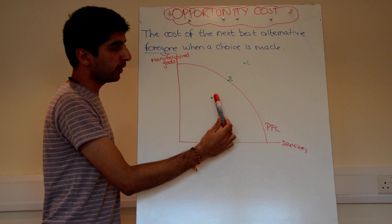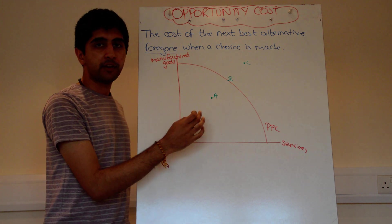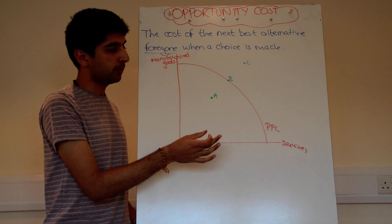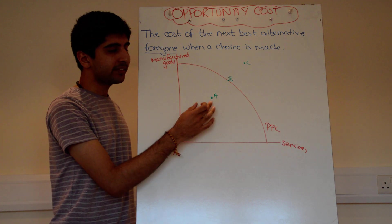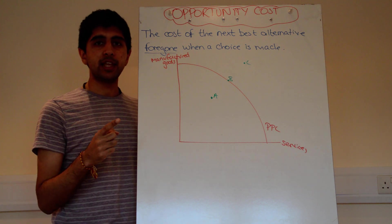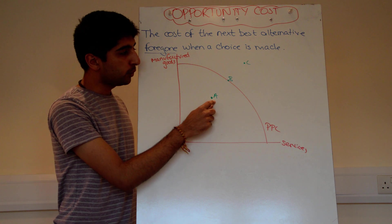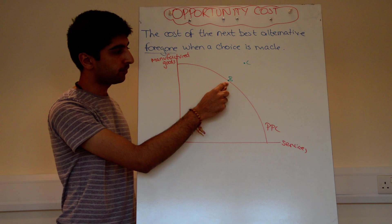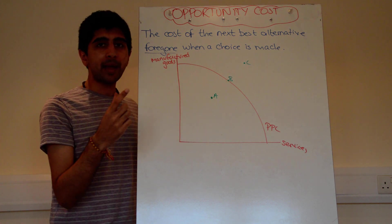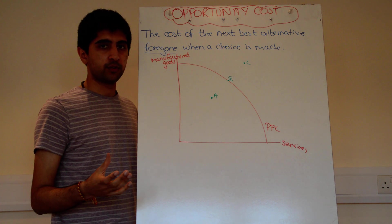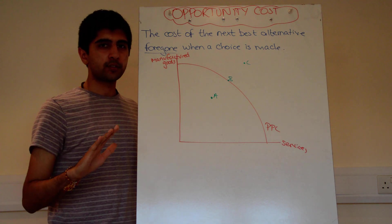Let's consider three points: A, B, and C. Point A is inside the PPC. If as an economy we were operating at point A inside our curve, that tells us we're being productively inefficient. Why? Because we could be producing at point B. If we were producing at point B, we would be maximising the use of our scarce resources. By producing at point A, we're not utilising all of our scarce resources — we've got resources to spare which we could be using but we're not.